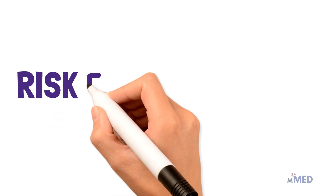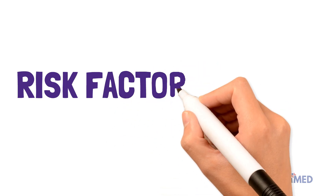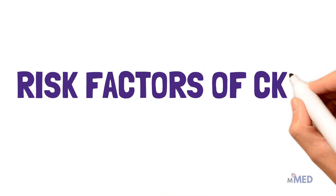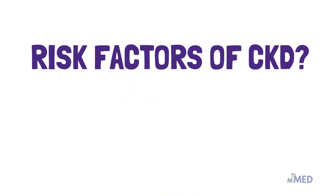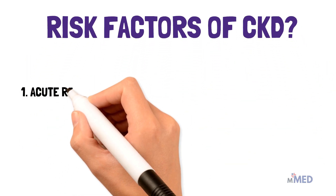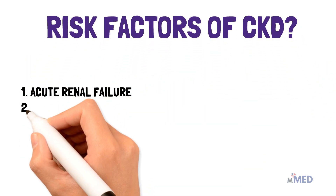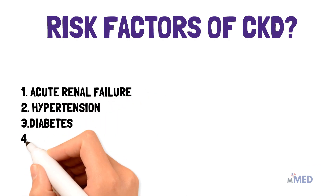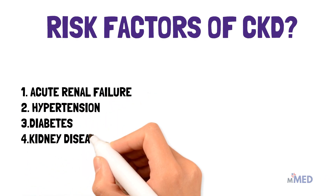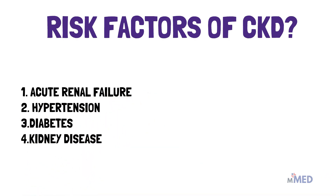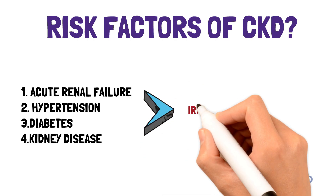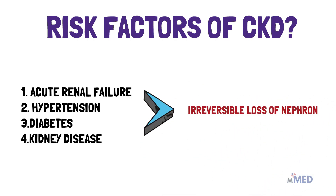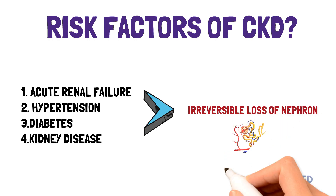What are the causes and risk factors of CKD? These include acute renal failure, hypertension, diabetes, and other kidney diseases including polycystic kidney disease — all of which can lead to irreversible loss of nephrons, which is chronic kidney failure.